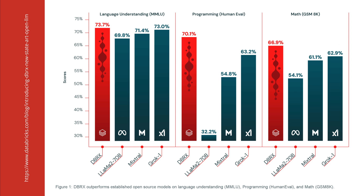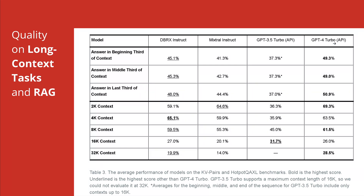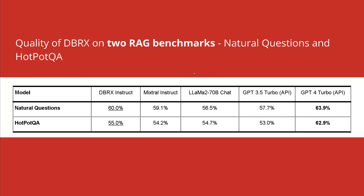It's just one hour that we have access to this, so the next tests will be in the coming days. For the long context task — how good is it at the 32k token context length — you have the Databricks Rx instruct model compared against Mixtral, GPT-3.5 Turbo, and the latest GPT-4 Turbo. When not restricted to just open source models, we are in the market of the most powerful LLMs.